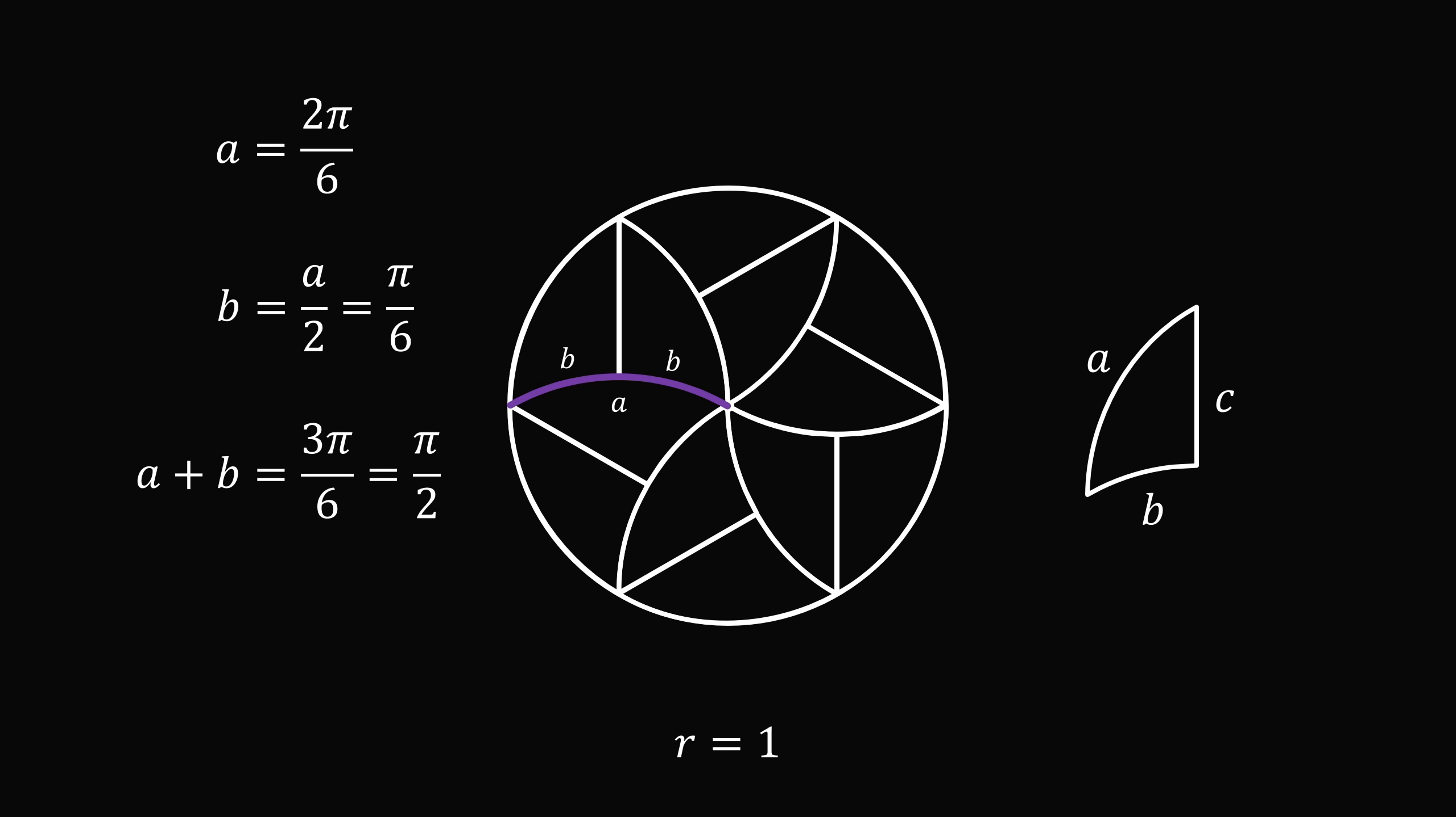a plus b is then equal to 3π over 6, which equals π over 2. The perimeter of a single region is therefore equal to π over 2 plus c. It remains to calculate the length c.